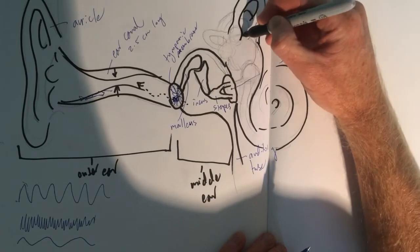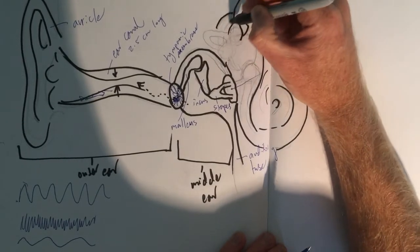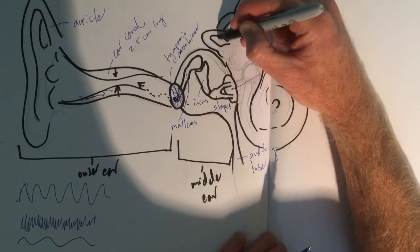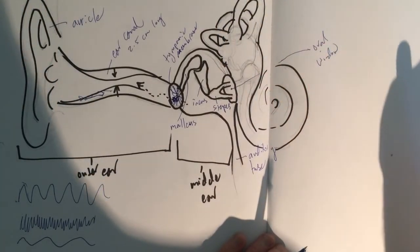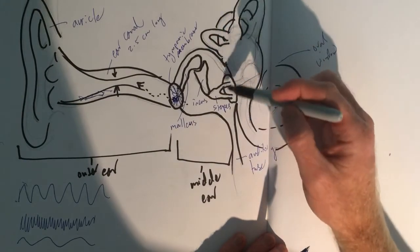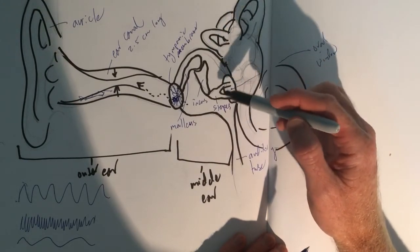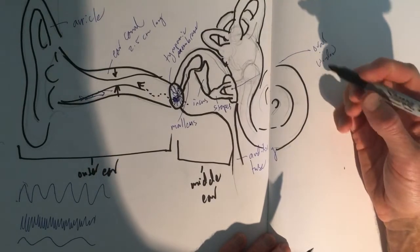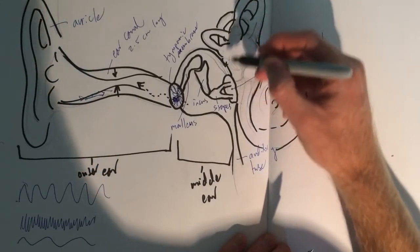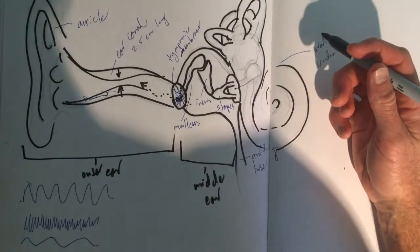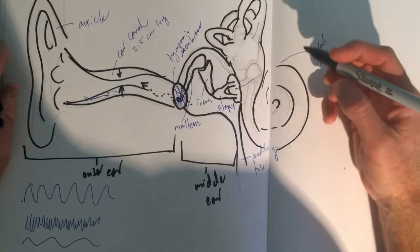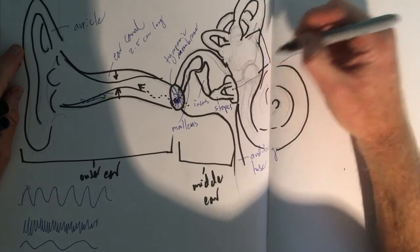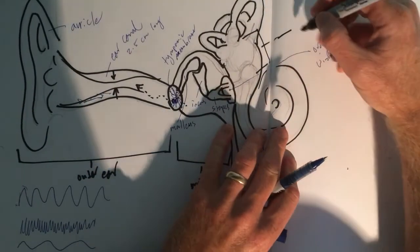Alright, so on the other side of that oval window, you've got a series of fluid-filled structures that actually have the pretty big job of converting these vibrations that are trapped, carried by the bone, into brain signals in the form of action potentials. This large structure up here, it has two parts. This whole structure from here to there, this guy is called the vestibule.